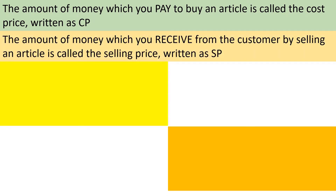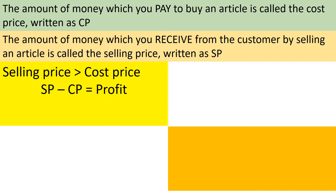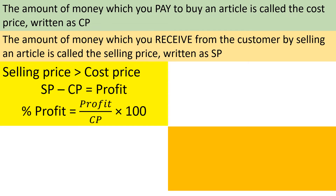If selling price is greater than cost price, there is profit, and the formula is selling price minus cost price. But if we need to find out profit percent, here is the formula: we calculate percent profit always on cost price. That's why the formula is profit divided by cost price, multiplied by 100, because percent means per hundred.